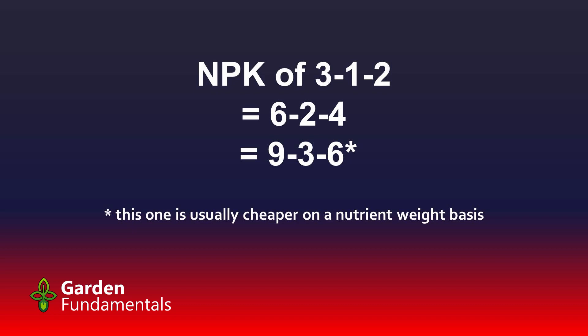I always find it funny when people see a 5-5-5 and a 10-10-10 and ask what's the difference. The ratios are exactly the same — it's just a matter of how much you put in the garden. In general, I buy the one with the largest numbers because for whatever reason they're always the cheapest. High numbers will give you a much less expensive fertilizer. But ideally, it has that ratio of 3-1-2.